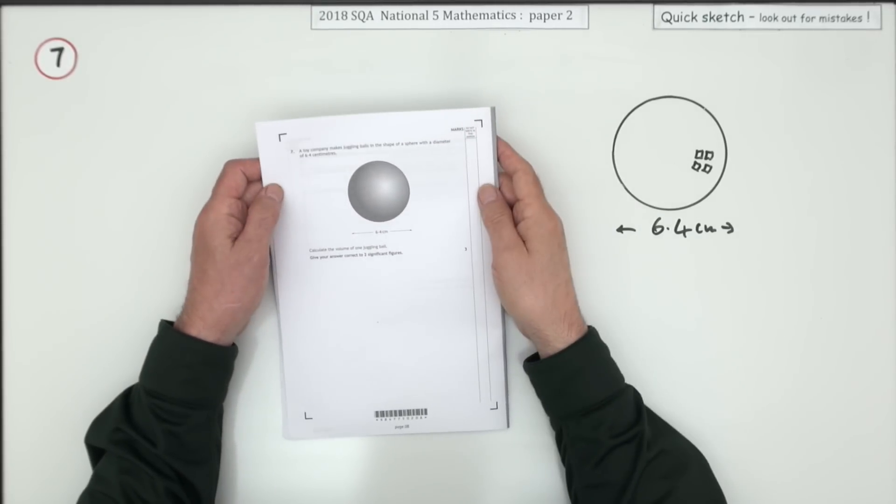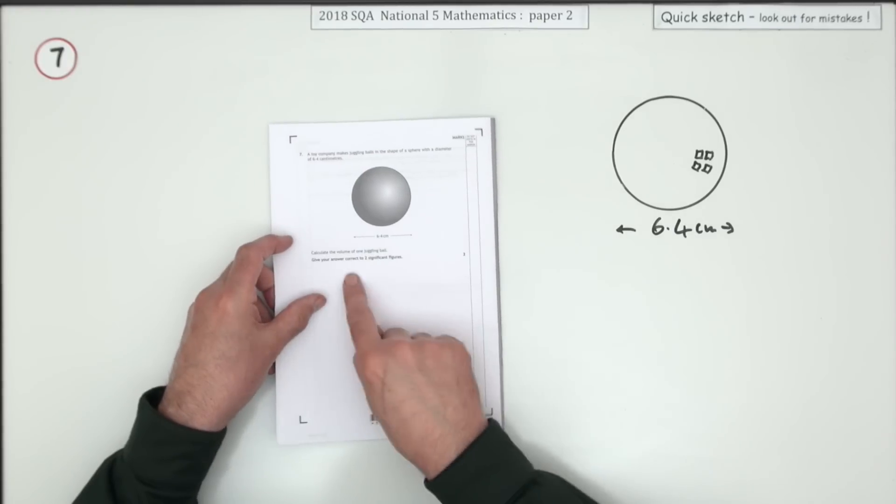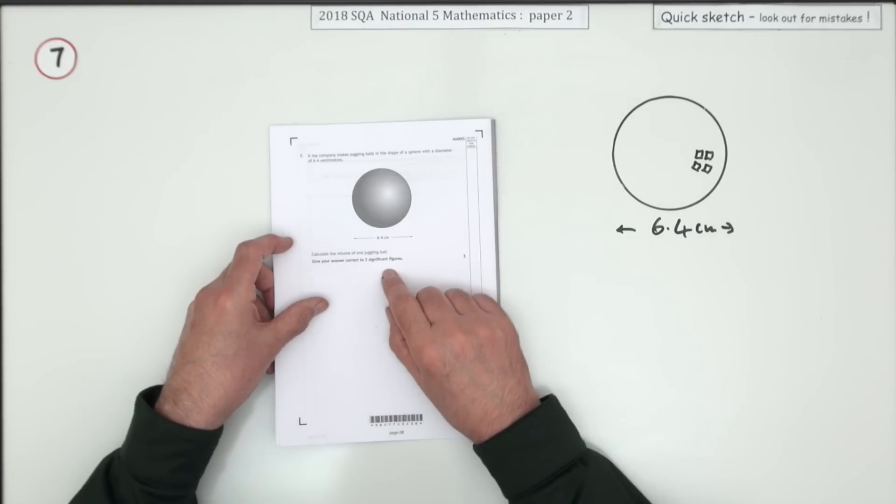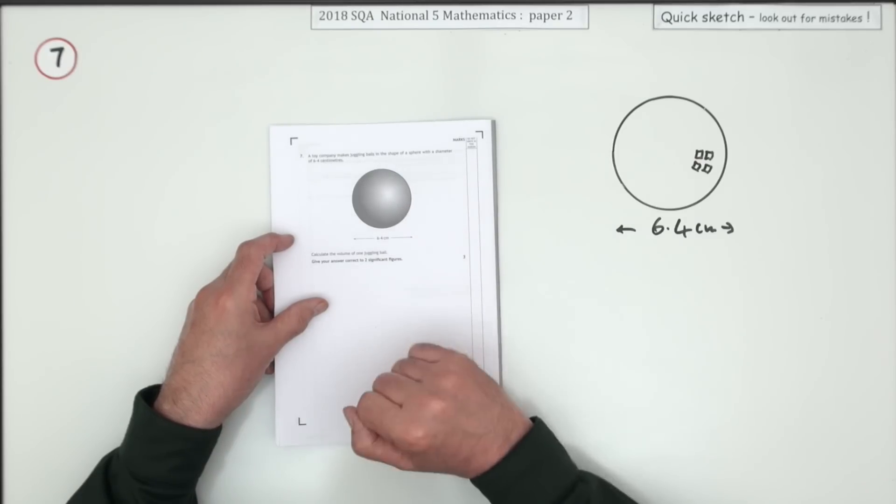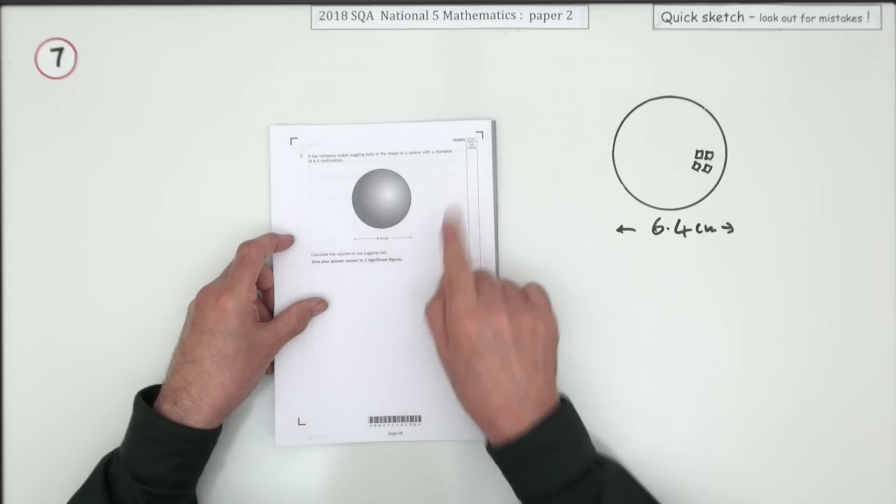Number 7 then from paper 2 of the 2018 National 5 Maths. Here we go, it's just three marks for finding the volume of a sphere. The ball's in the shape of a sphere with diameter 6.4 centimeters. What's the volume of that to two significant figures?